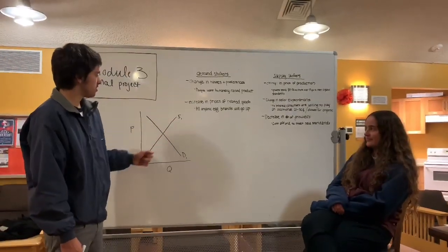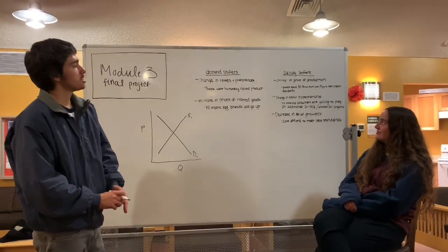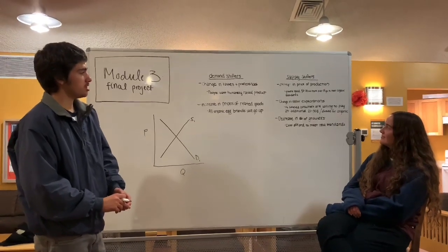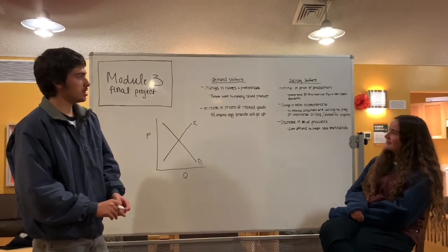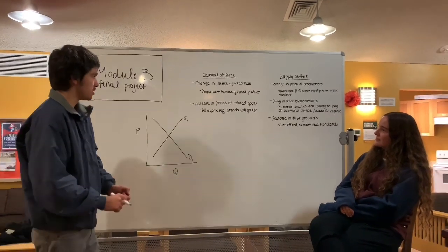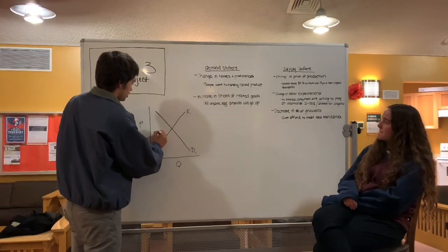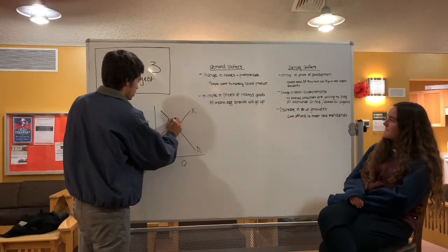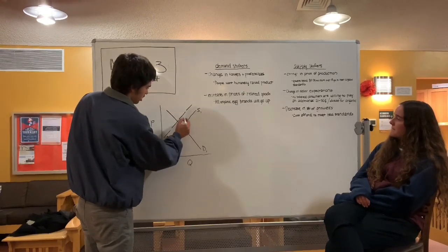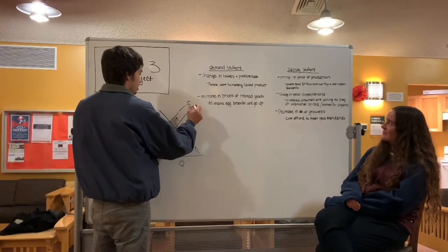Alright, so we have our supply 1 and demand 1 right here. So this first supply shifter being that there is an increase in the price of production, that is going to mean that there is going to be less suppliers for organic eggs. So that is going to result in a shift along the supply curve up and to the left, resulting in a supply 2.